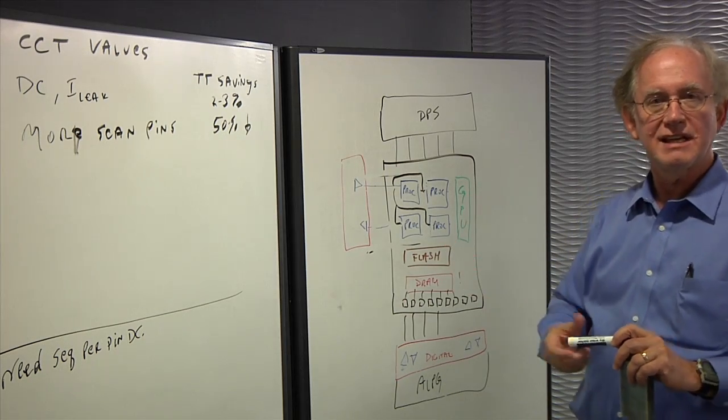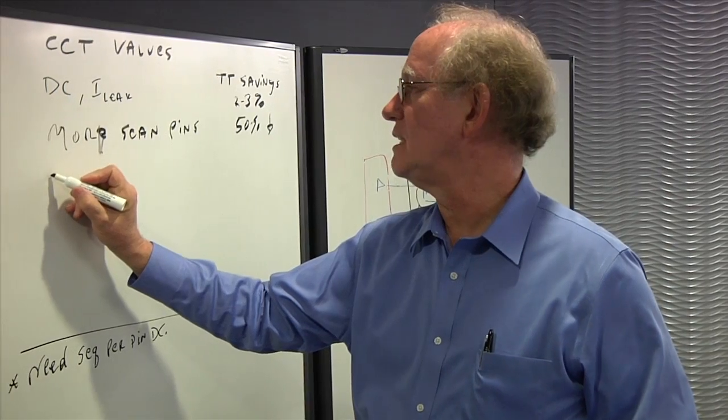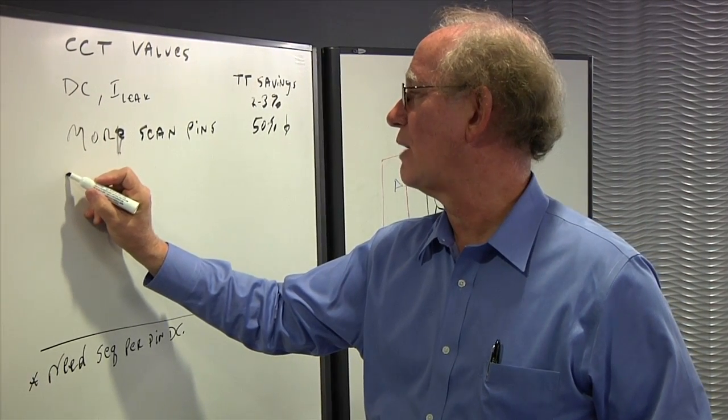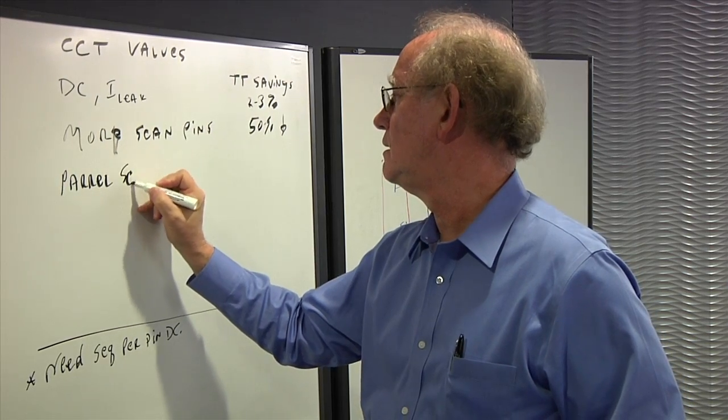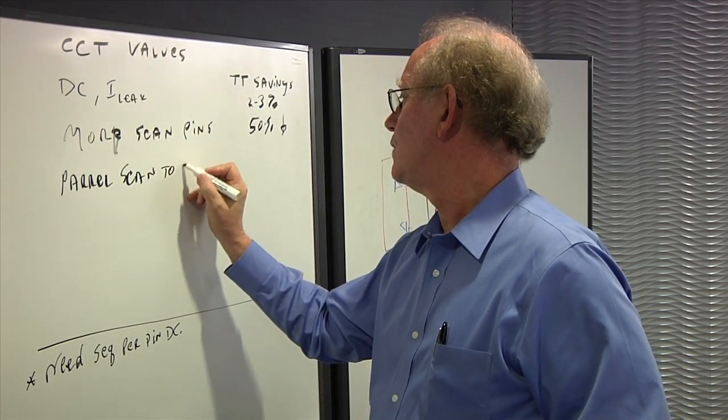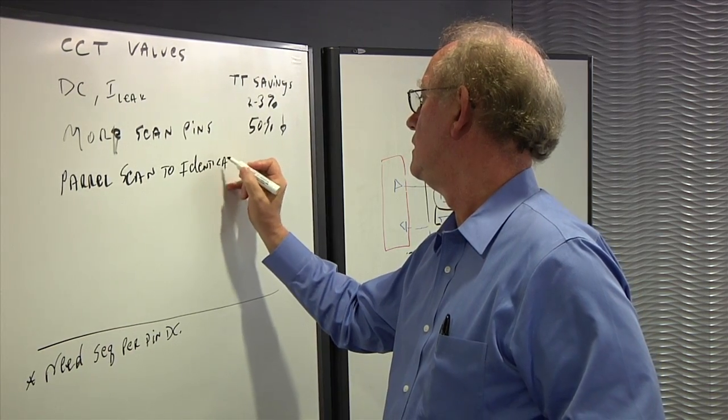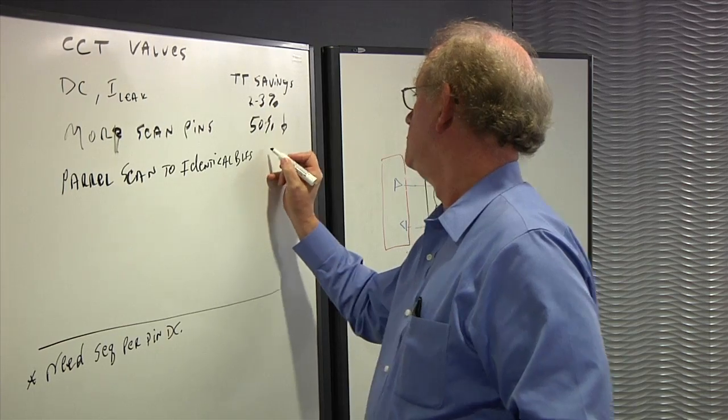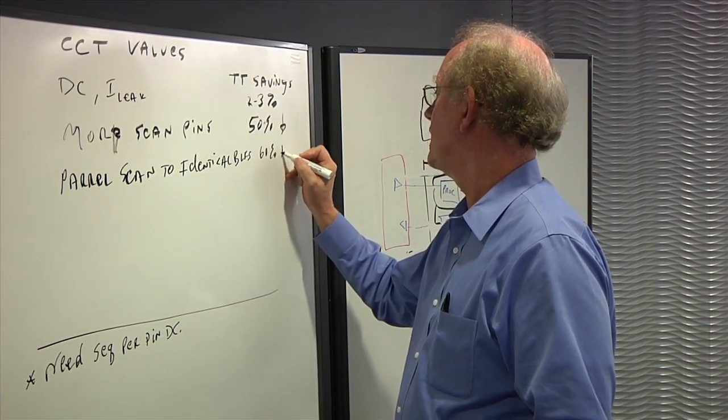So using heterogeneous, I'll call it parallel scan, to identical blocks, you can get 60 or 70% test time reduction.